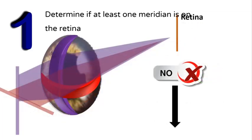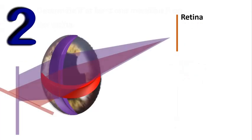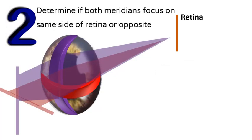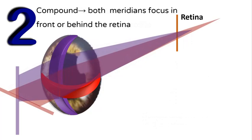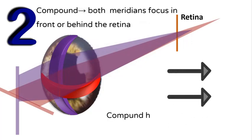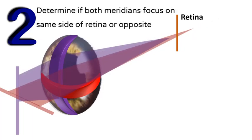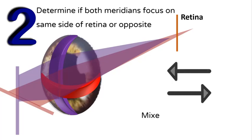If no meridian falls on the retina, then go to step two. Step two: determine if both meridians focus on the same or opposite sides of the retina. If they fall on the same side and focus in front, it is compound myopic astigmatism. If they fall on the same side but focus behind, it is compound hypermetropic astigmatism. If both meridians focus on opposite sides of the retina, it is mixed astigmatism.